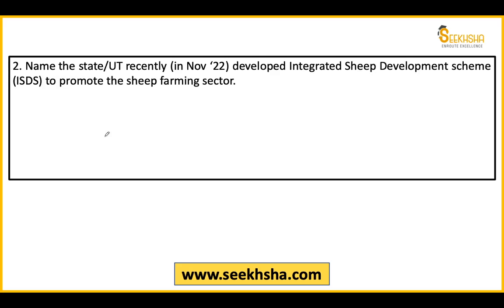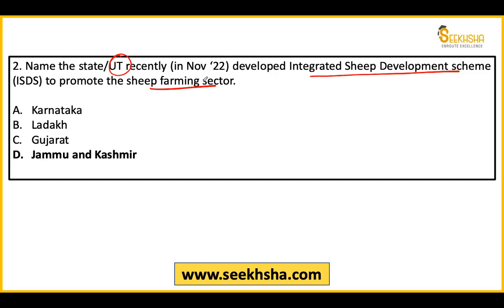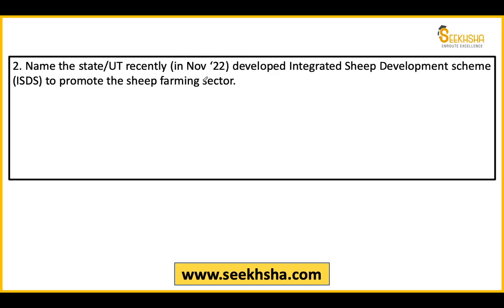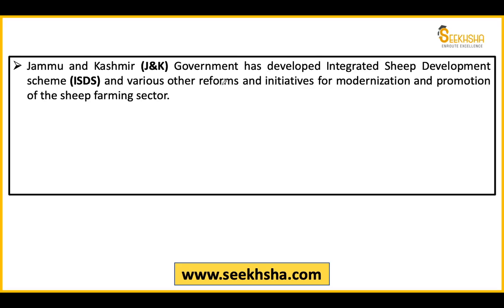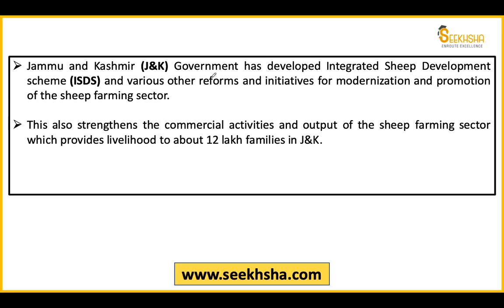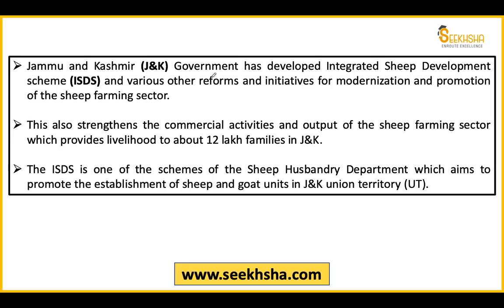Second question: Which state or union territory has launched the Integrated Sheep Development Scheme to encourage sheep farming in the sector? The right answer is Jammu and Kashmir. The J&K Integrated Sheep Development Scheme aims at modernization of the sheep farming sector and encourages commercial activities to benefit around 12 lakh families.